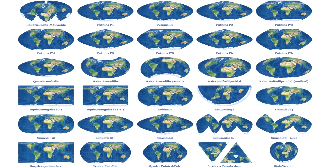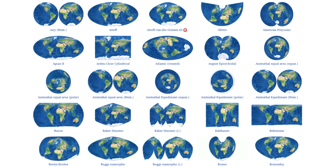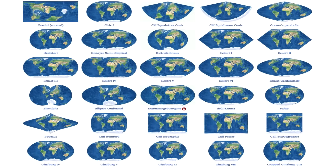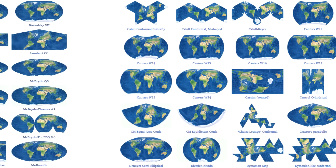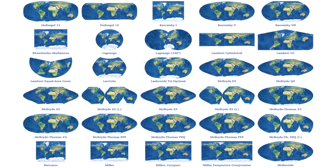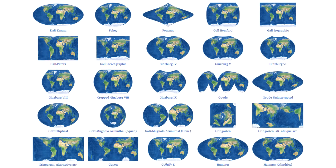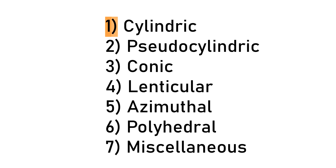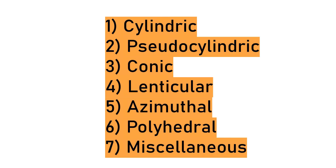Just searching for this video, I found around 250 projections, and they are virtually infinite, because depending on the purpose of the map, some distortions are acceptable and others are not. Therefore, different map projections exist and are created in order to preserve some properties of the sphere-like body that is the Earth, at the expense of others being distorted. They can belong to 7 groups, but I'm going to go at it mostly from a visual perspective.